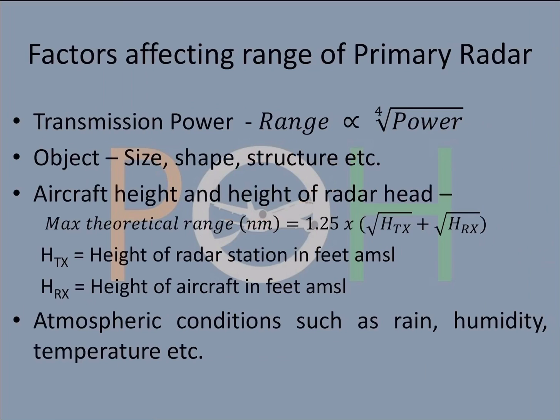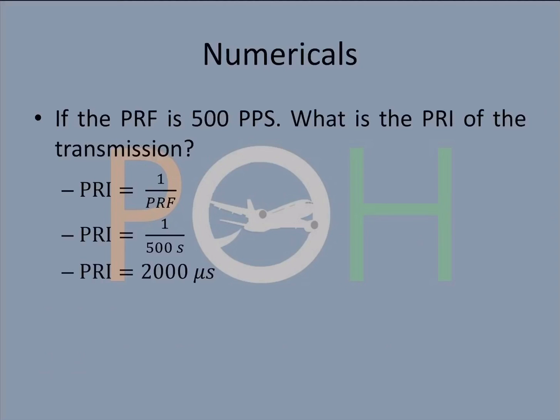The range also depends on aircraft height and height of the radar also. Maximum theoretical range is 1.25 times root of transmitter height plus root of receiver height, all in feet above mean sea level. It also gets affected by atmospheric conditions such as rain, humidity, temperature, etc.